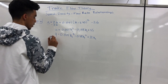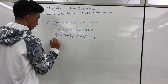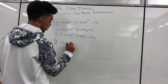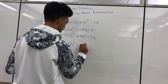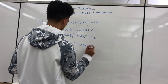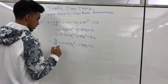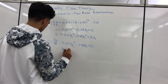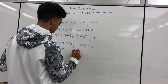Taking the derivative of q with respect to k, we get 0.003k squared minus 0.96k plus 55. Setting this equal to zero and solving, we get k_c equals 74.7 vehicles per mile.